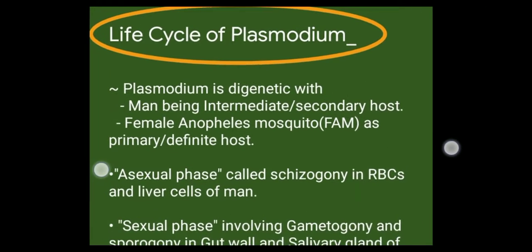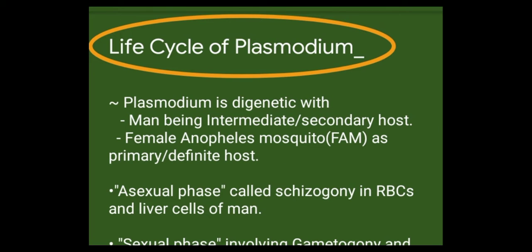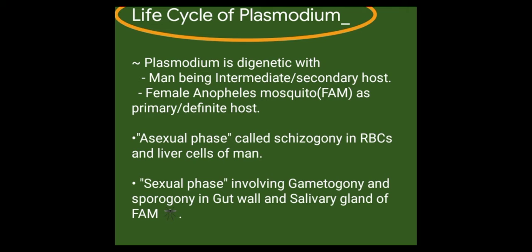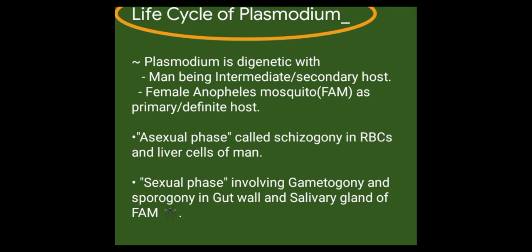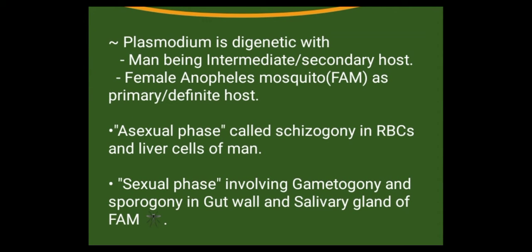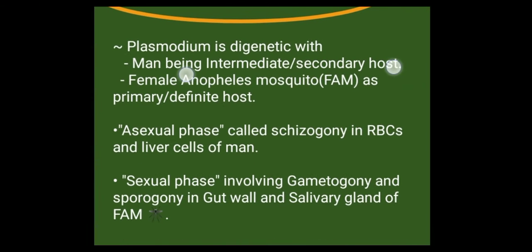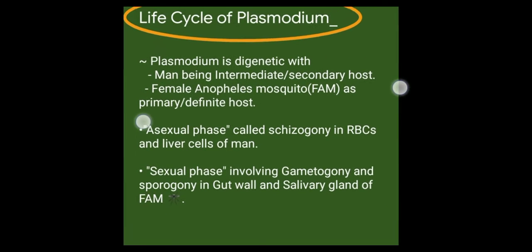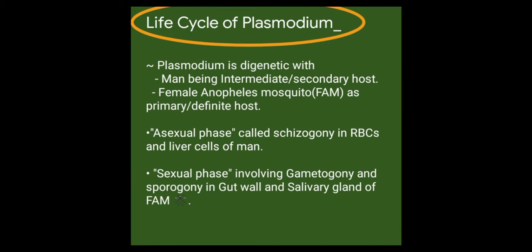Plasmodium is digenetic, with man being an intermediate secondary host and the female Anopheles mosquito as the primary definitive host. An asexual phase called schizogony occurs in the RBCs and liver cells of man, and a sexual phase involving gametogony and sporogony occurs in the gut wall and salivary gland of the female Anopheles mosquito.